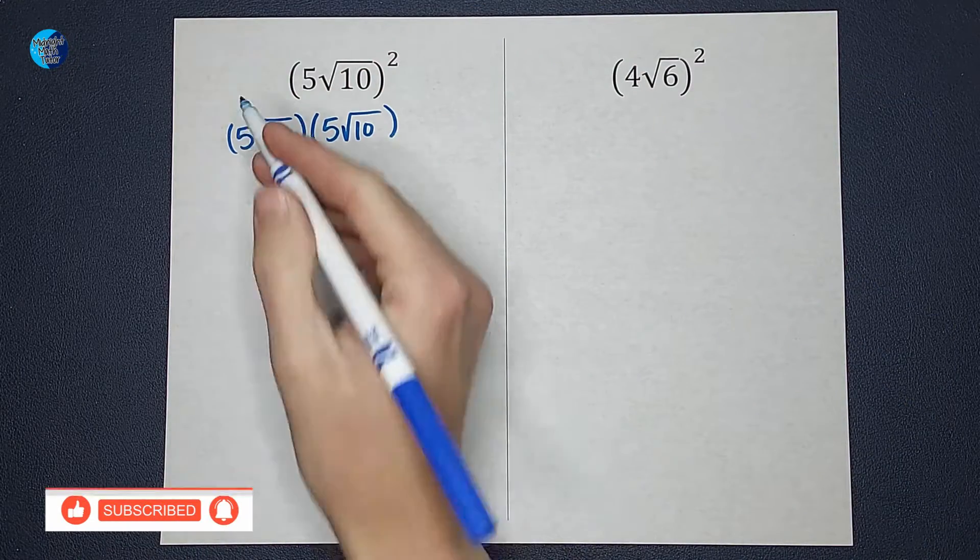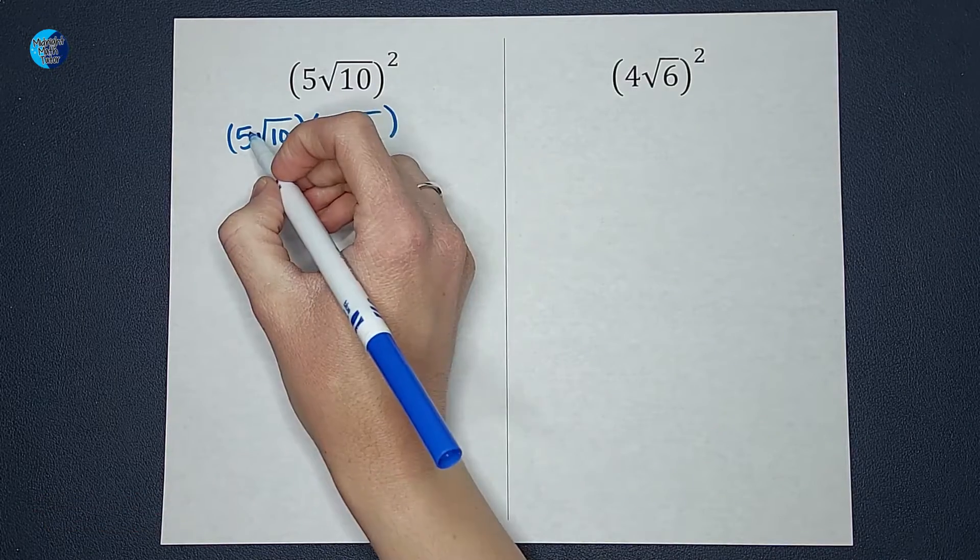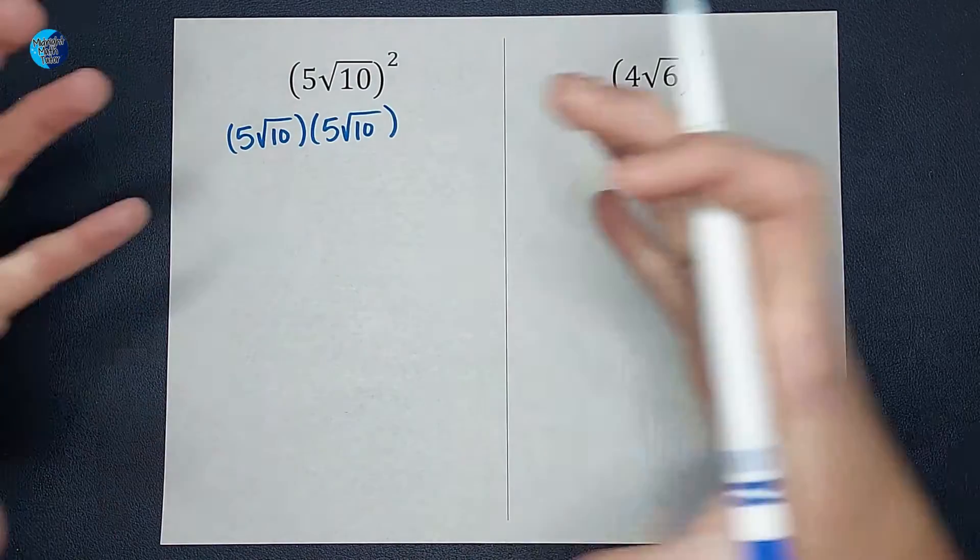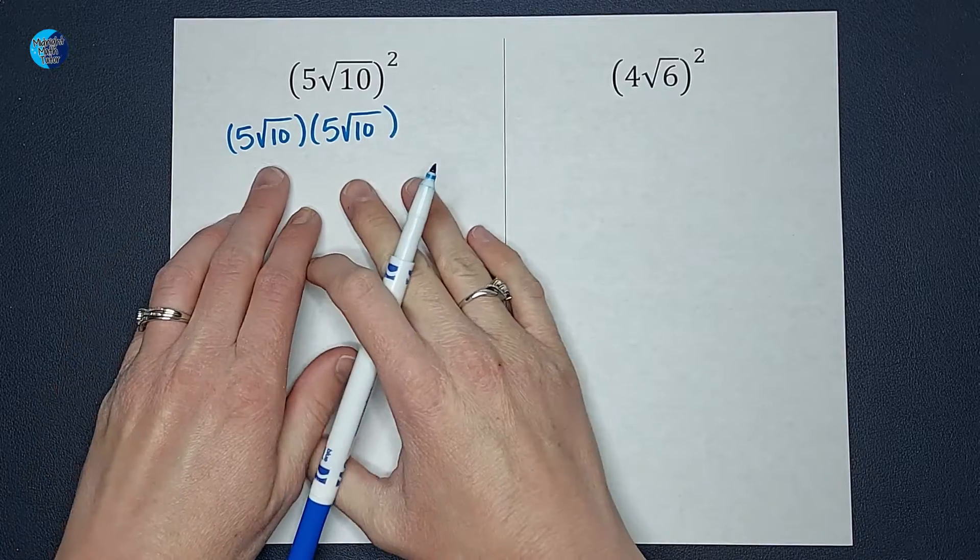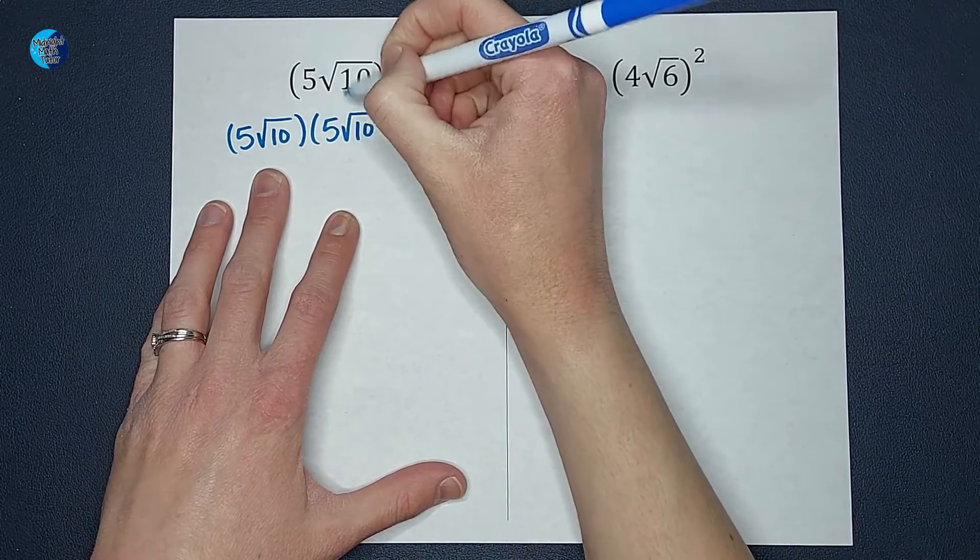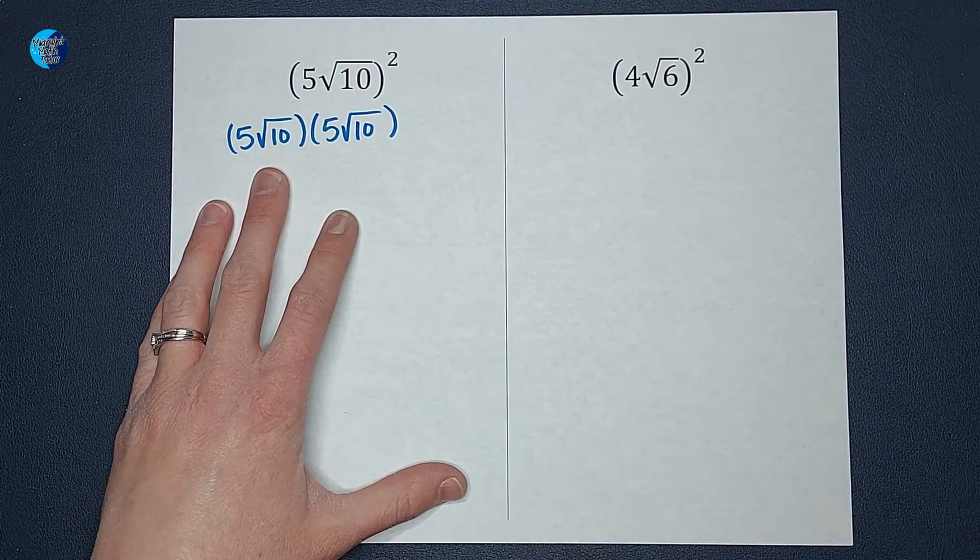When I do that is when I have a plus sign or a minus sign here, that's what's separating them. These are being multiplied, so I'm not going to do the foiling.